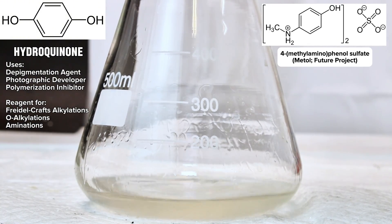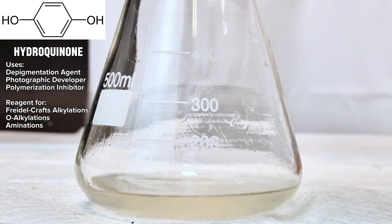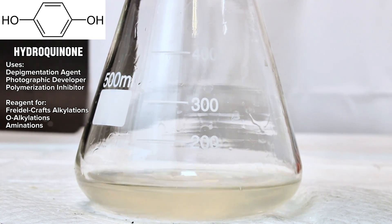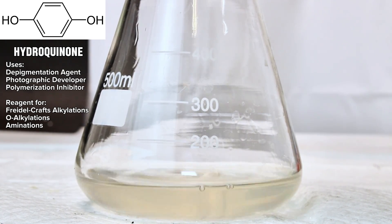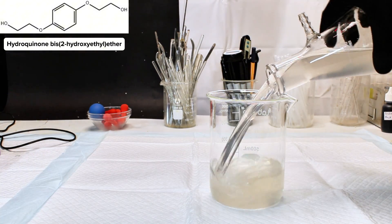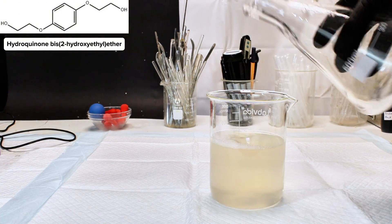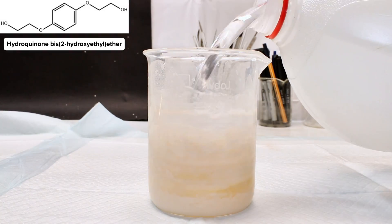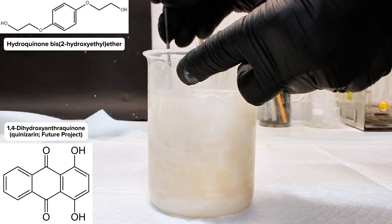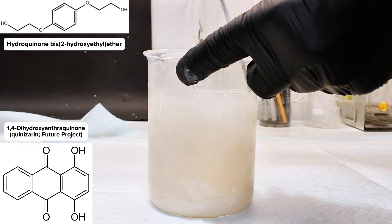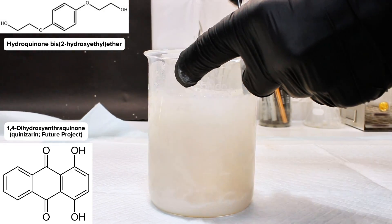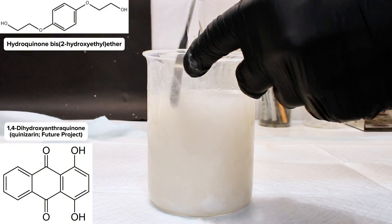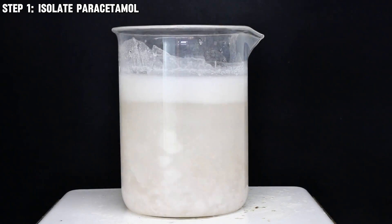On top of that, the deprotonated phenylate of hydroquinone easily undergoes orthoalkylation, giving ethers and diethers. Similarly, it will easily undergo Friedel-Crafts reactions, which I plan to take advantage of to make the dye quinizarin. Anyway, to make this chemical, I first needed to isolate paracetamol from Tylenol, which is what you've been watching me do in the background.